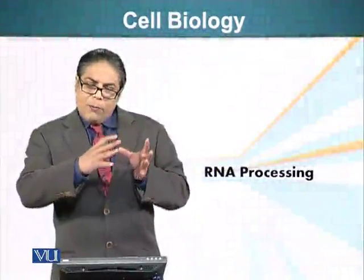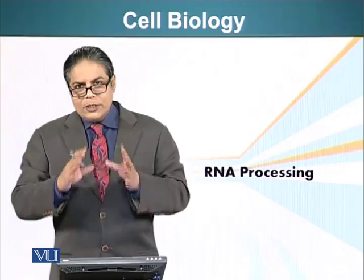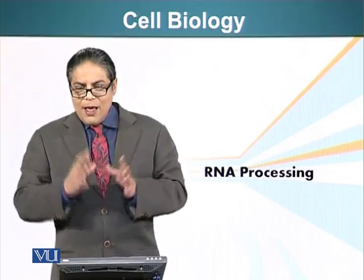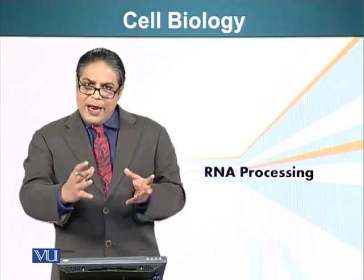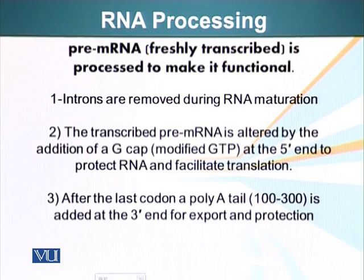We just saw differences between how eukaryotes and prokaryotes regulate their genes. Eukaryotes have additional problems to solve because the messenger RNA which is made initially is not the messenger RNA which will be used for transcription. The first RNA which is made is called the pre-messenger RNA, which has been freshly transcribed. It has to go through processing before it can be used by the ribosomes, first exported from the nucleus, then recognized by the ribosomes, and ultimately the message in the messenger RNA can be translated into functional proteins.